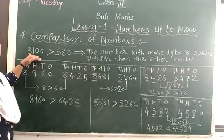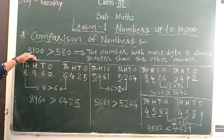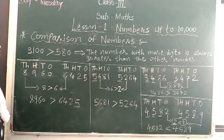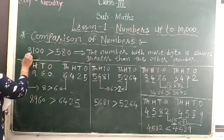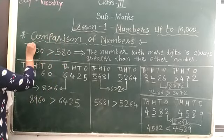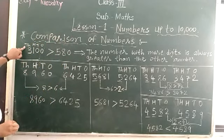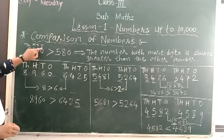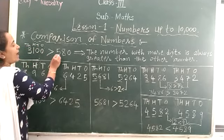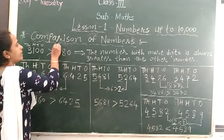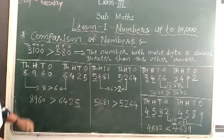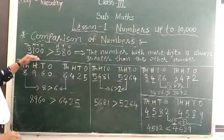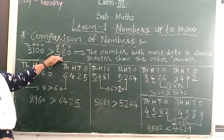I will give one example. We have 3,100 and 518. Numbers up here: 3,100. So 3 is in the 1,000 place, 1 is in the 100 place, 0 is in the 10s place, 0 is in the 1s place. And here 518: 5 is in the 100s place, 8 is in the 10s place, and 0 is in the 1s place. Now here 4 digits and here 3 digits.